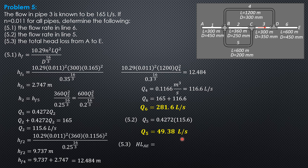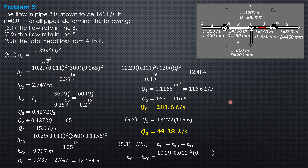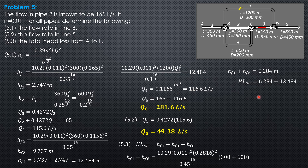Then the total head loss from A to E is HF1 plus HF4 plus HF6. The combined discharge of lines 1 and 6 is common — 10.29, N², Q², and diameter are shared, so only the length differs. HF1 plus HF6 equals 10.29 times 0.011² times 0.2816² over 0.45 to the 16/3, times a length of 5300 plus 5600. So HF1 plus HF6 equals 6.284 meters. The total head loss is 6.284 plus 12.484, giving a total head loss of 18.77 meters.